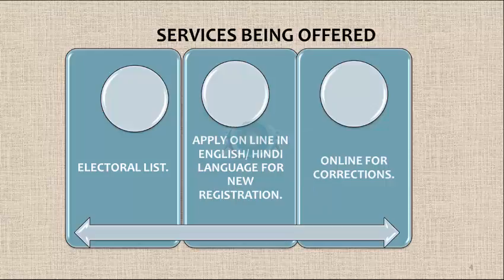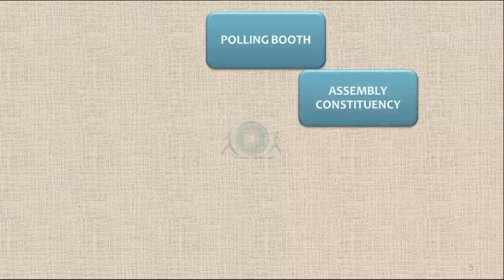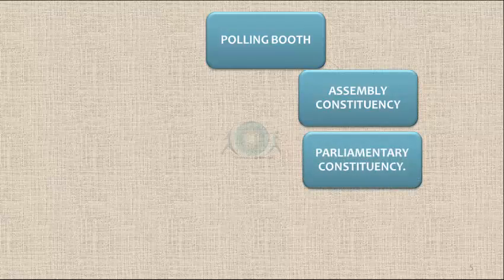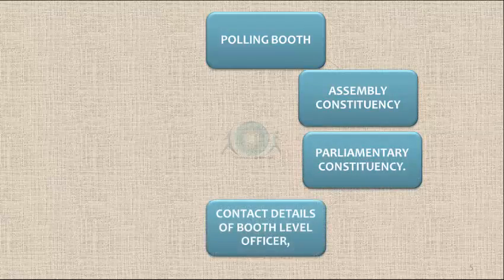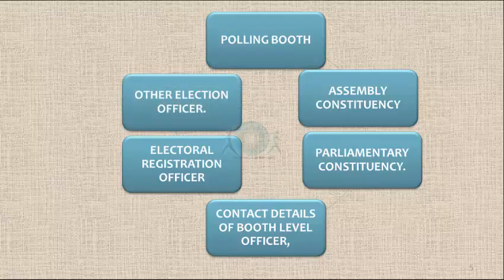One can also apply online for corrections if there are any. Users can view the details of polling booth, assembly constituency, and parliamentary constituency, and can also get the contact details of booth level officers, electoral registration officers, and other election officers.